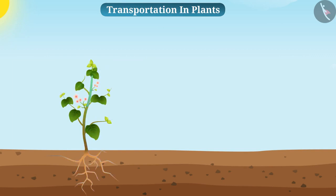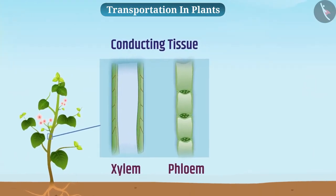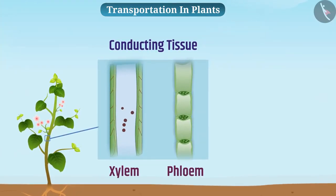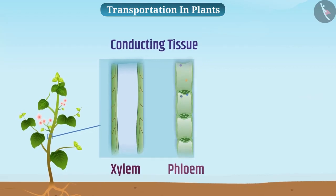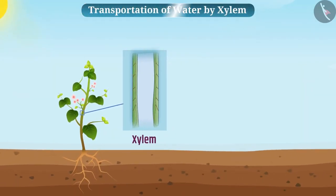In plants, the function of transportation of various substances takes place with the help of conducting tissue — xylem and phloem. Xylem carries water and minerals, while phloem carries food and other substances. Let us now see how water is carried by xylem.